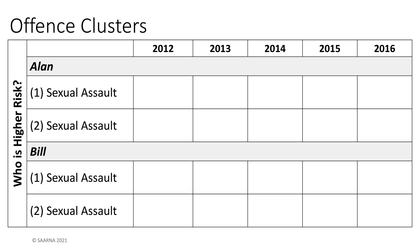Here's an example using two made-up individuals, Alan and Bill. All things being equal, based upon Alan and Bill's offending pattern, the question I'm going to ask you is: which person is higher risk? Both of them have two convictions for sexual assault, but let's examine the order of events.